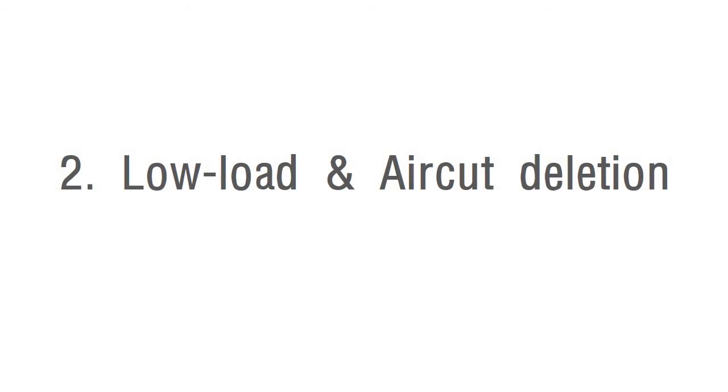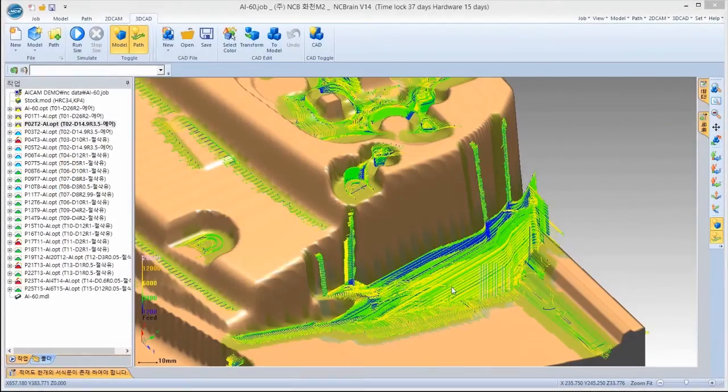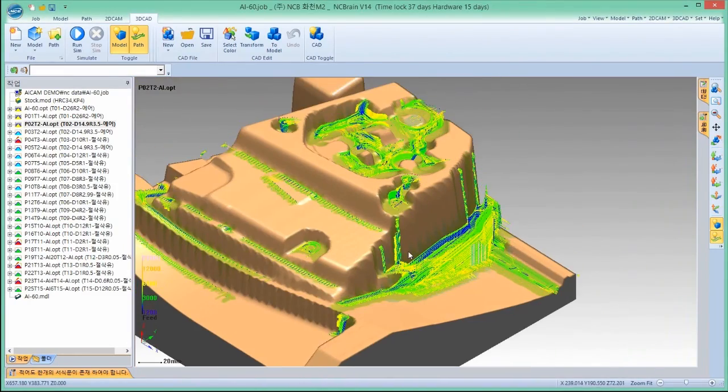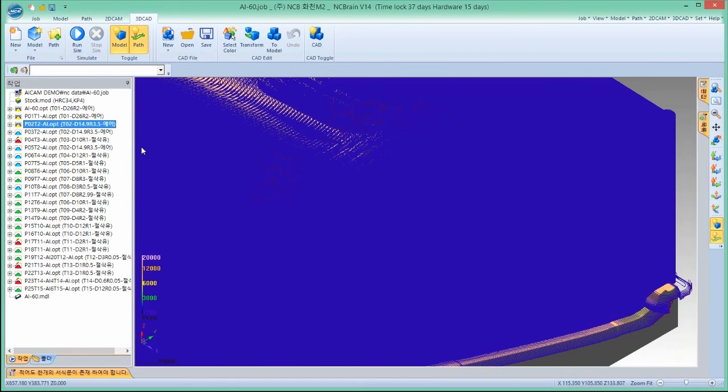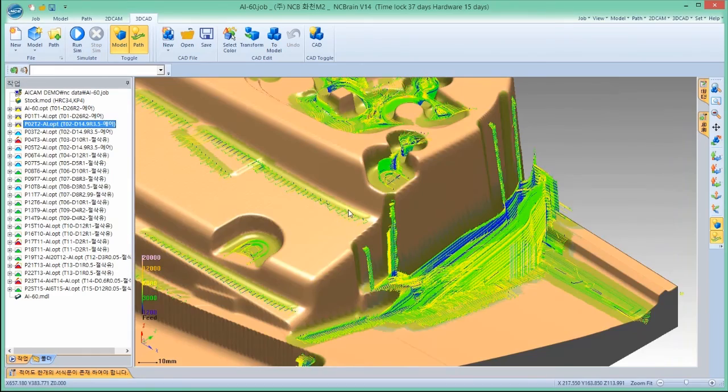Second, low load and air cut area toolpath deletion. This is AI Cam's rest rough toolpath, which is originally from the normal rough toolpath. You can see most of the toolpath deleted except the necessary part to be machined.